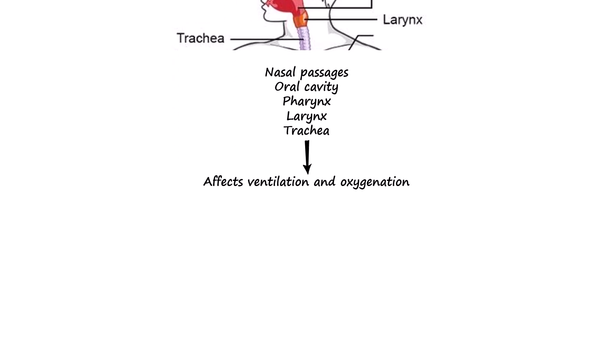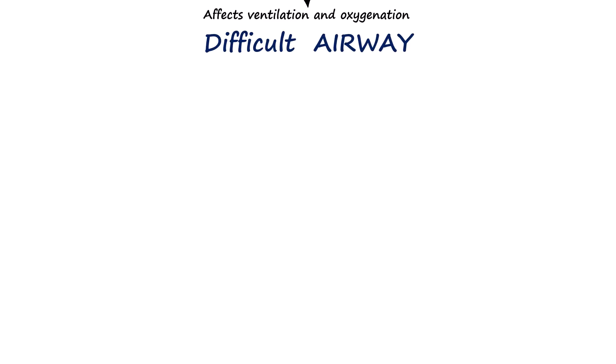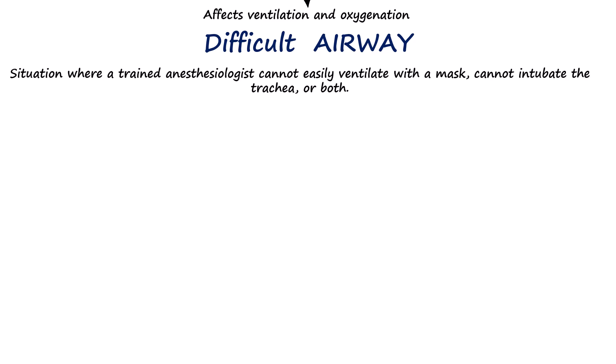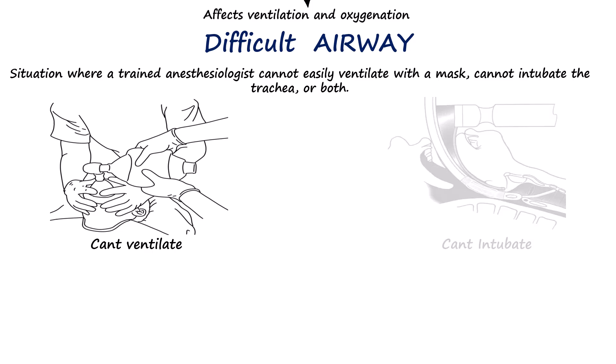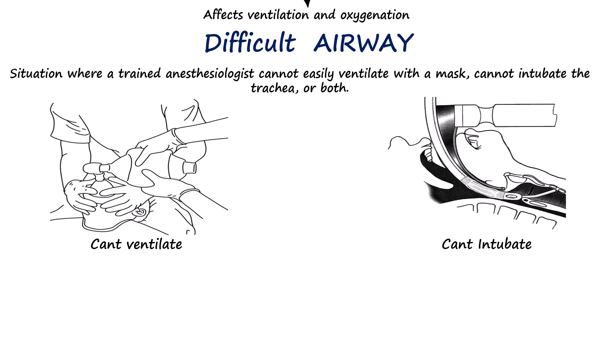But sometimes, because of certain patient factors or clinical situations, the airway can give us trouble, meaning we might not be able to ventilate or intubate the patient. When that happens, we call it a difficult airway. Clinically, a difficult airway is defined as a situation where a trained anesthesiologist cannot easily ventilate with a mask, cannot intubate the trachea, or both.